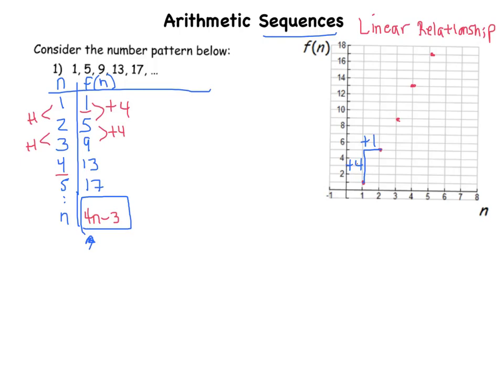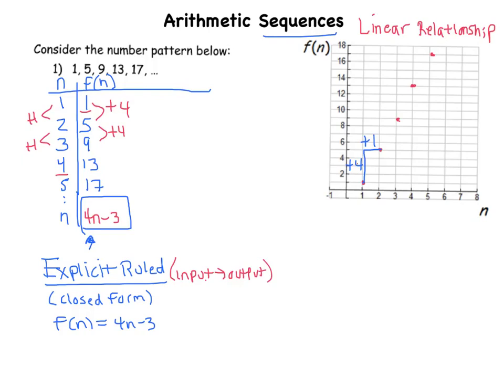So in the language of sequences, what we just came up with here is called the explicit rule. I'm going to write that below. This is the explicit rule, sometimes we'd say it's like the closed form. So that would be f of n equals 4n minus 3. One thing you should know about an explicit rule is that it's useful because it tells us how to get from input to output. It's one way of describing the pattern of this sequence. If I want to know the 50th number on this list, I can just plug in 50 for n.